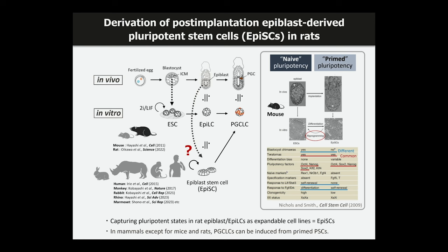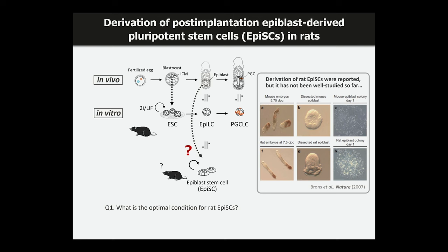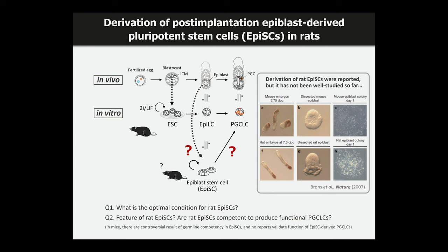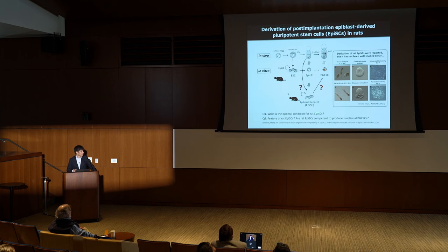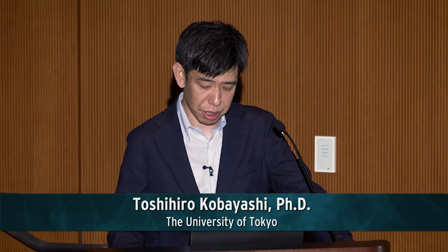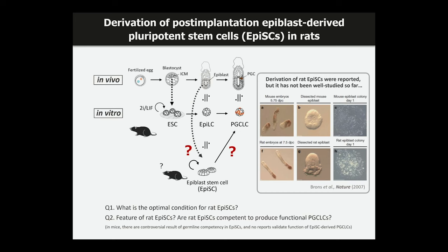Interestingly, in mammals except for mice and rat, PGCLCs can be induced from primed pluripotent stem cells. The question is whether we can derive rat EpiSCs, what the optimal culture condition is, what features rat EpiSCs have, and whether rat EpiSCs are competent to produce functional PGCLCs. In mice there are some controversial results about germline competency in EpiSCs, and no report has functionally validated EpiSC-derived PGCLCs. This project was mainly done by Dr. Kenyu Iwatsuki, a PhD student and current postdoc in my lab.